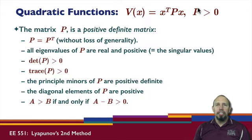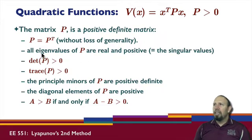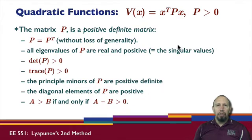A matrix isn't positive definite because you call it P — it's positive definite because of other properties. In particular, the two important properties are that the matrix is symmetric and all the eigenvalues are real and positive. In the case that the matrix is symmetric, the eigenvalues are the singular values, and the singular values for any matrix are real and positive.